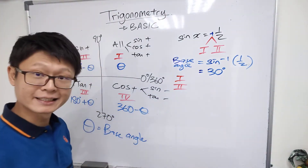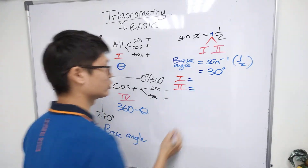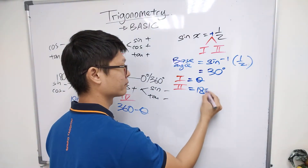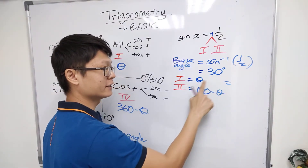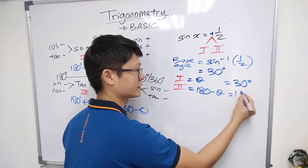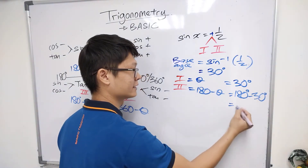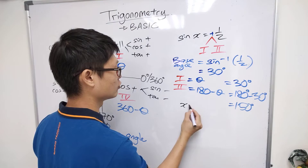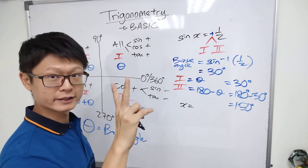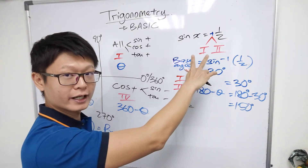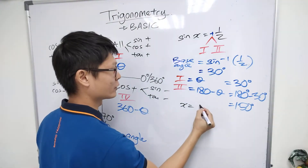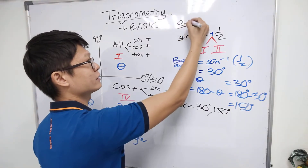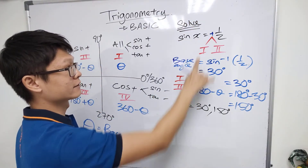Now we can find the quadrant one and quadrant two answers using the formula. Quadrant one is theta, quadrant two is 180 minus theta. Put the base angle in: quadrant one gives 30 degrees, quadrant two gives 180 minus 30 equals 150 degrees. So you get two answers. Most of the time x will have two answers — about 90% of the time.